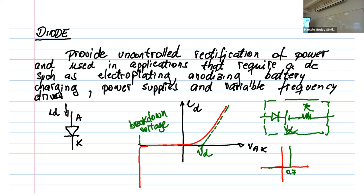When it's silicon, the barrier is either 0.7 or 0.6 volts. Germanium diodes are no longer commonly manufactured. We also have Schottky diodes, which have a lower voltage drop of 0.2 or 0.3 volts — useful because lower voltage drop means less loss.